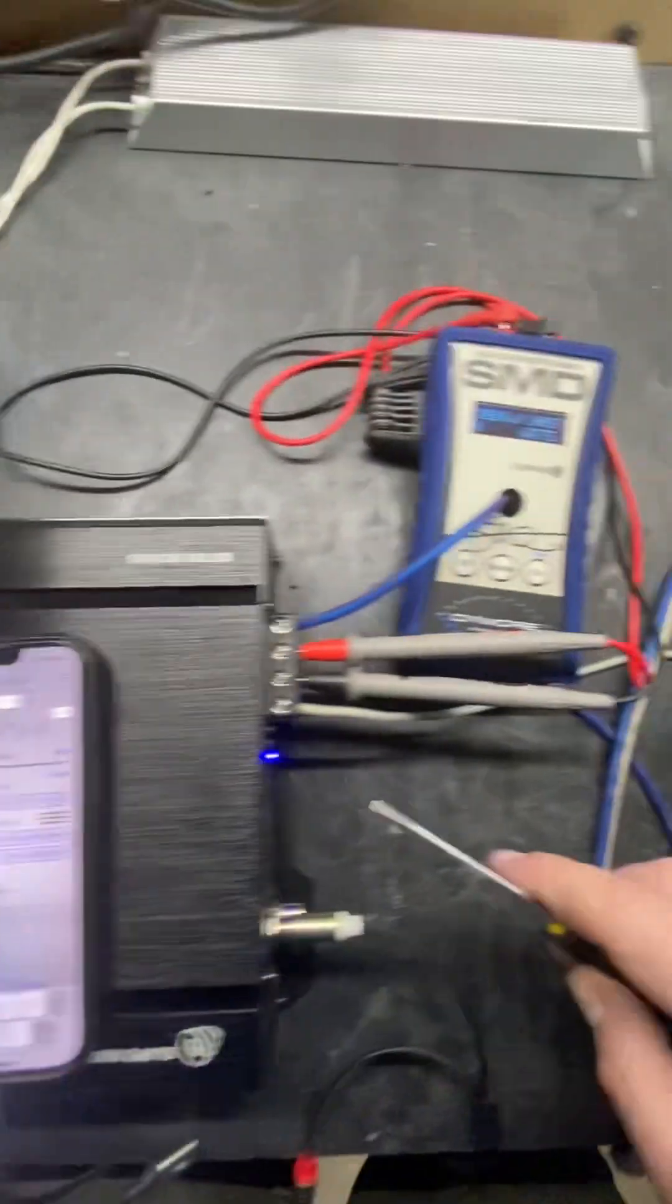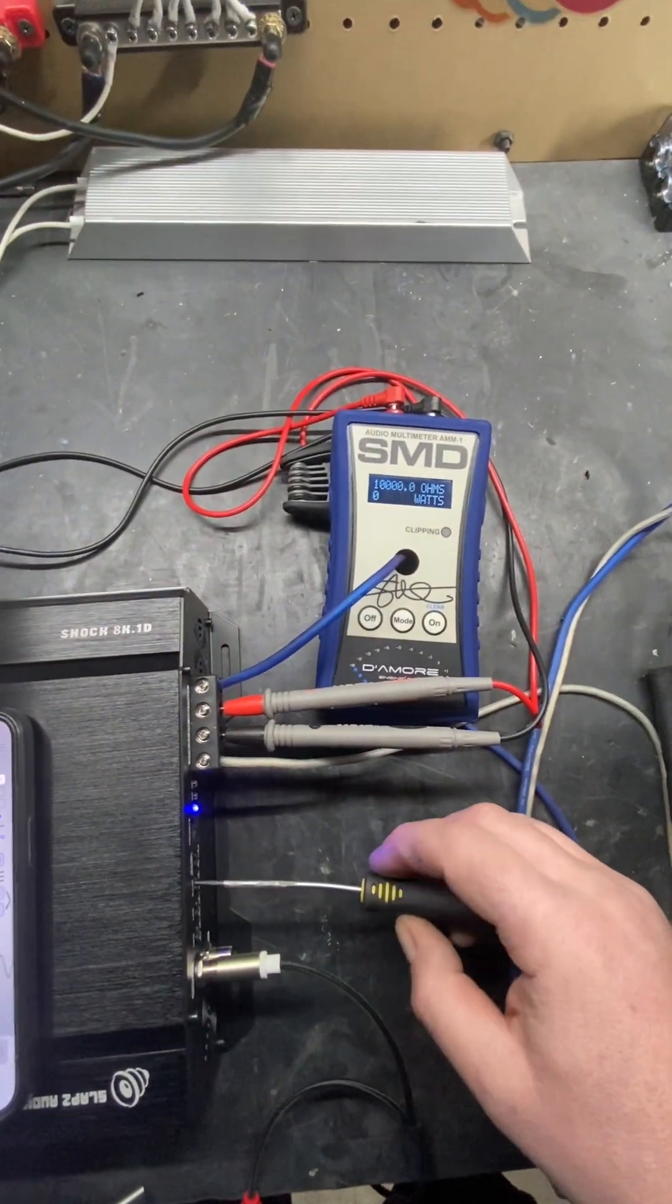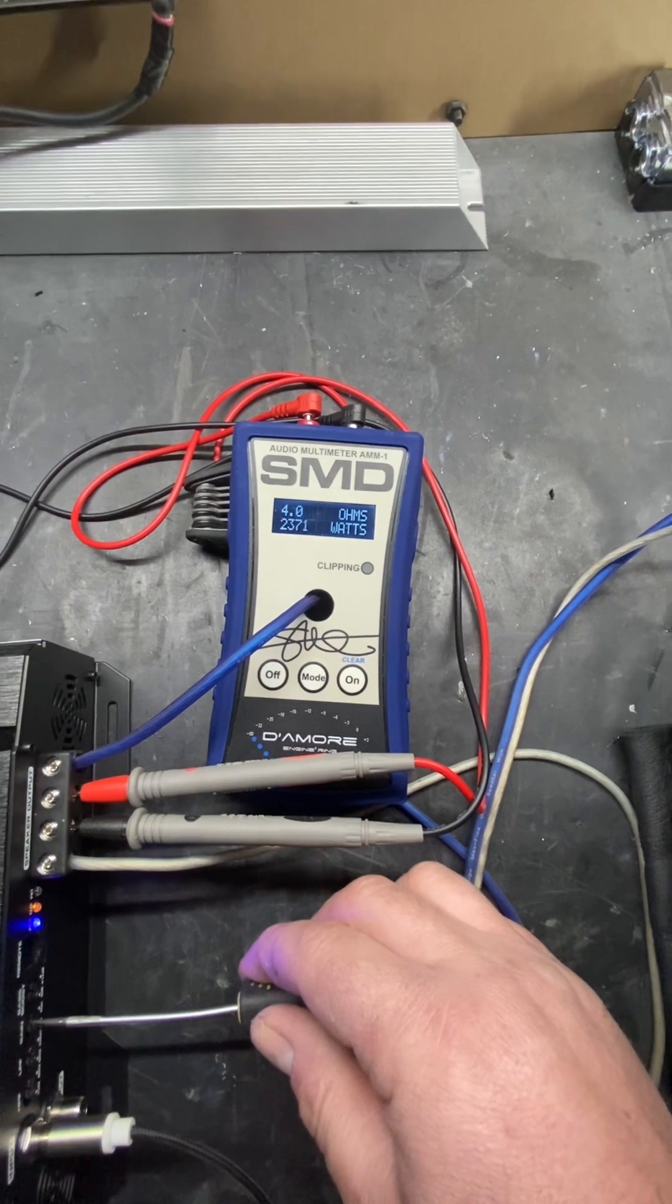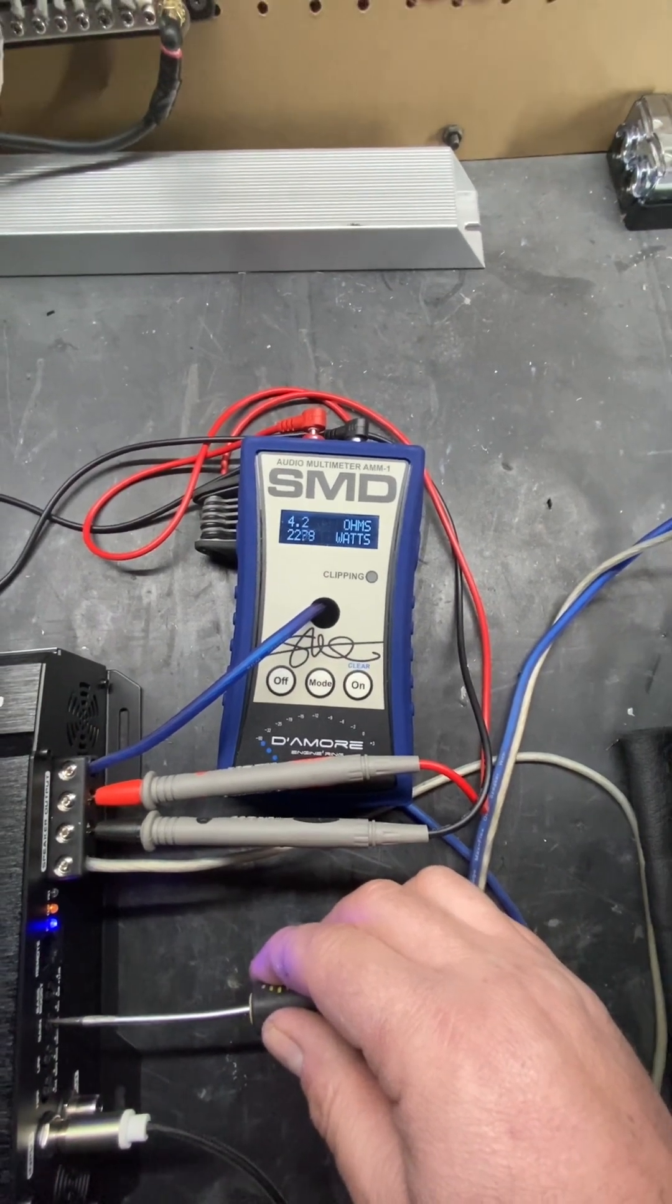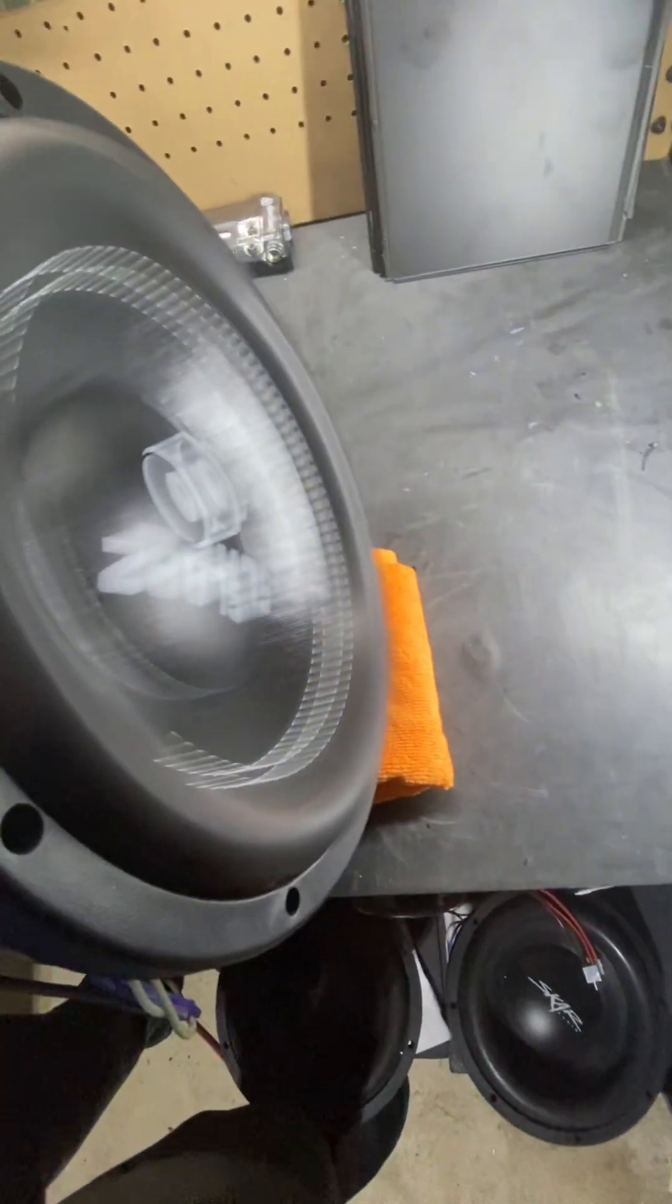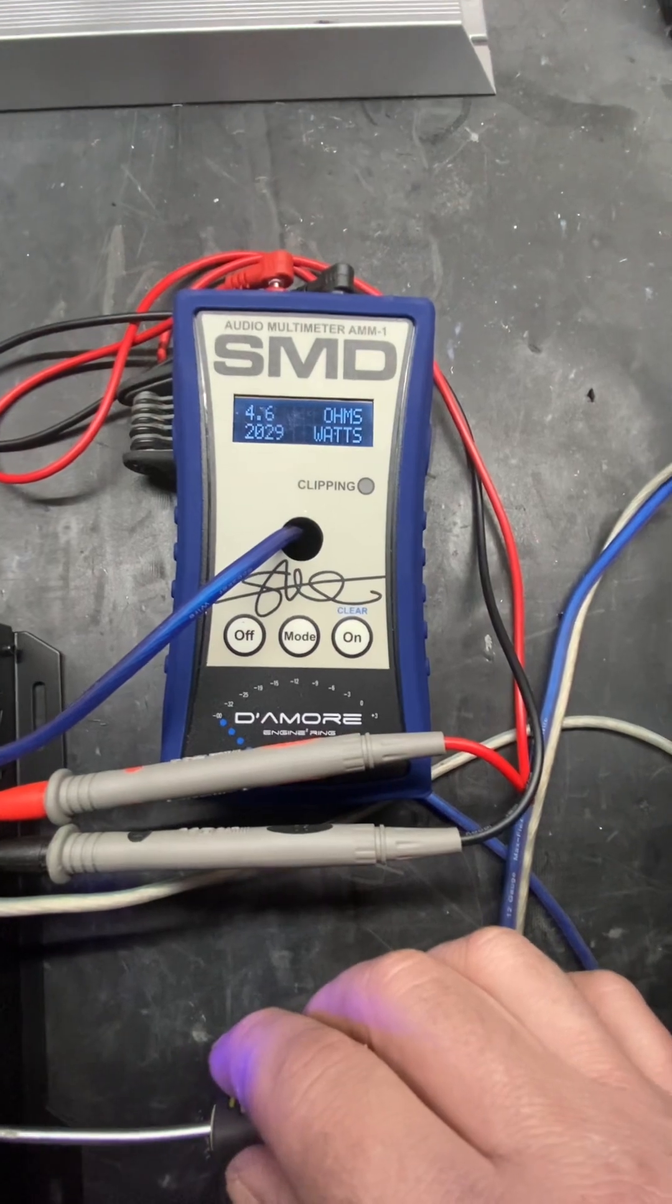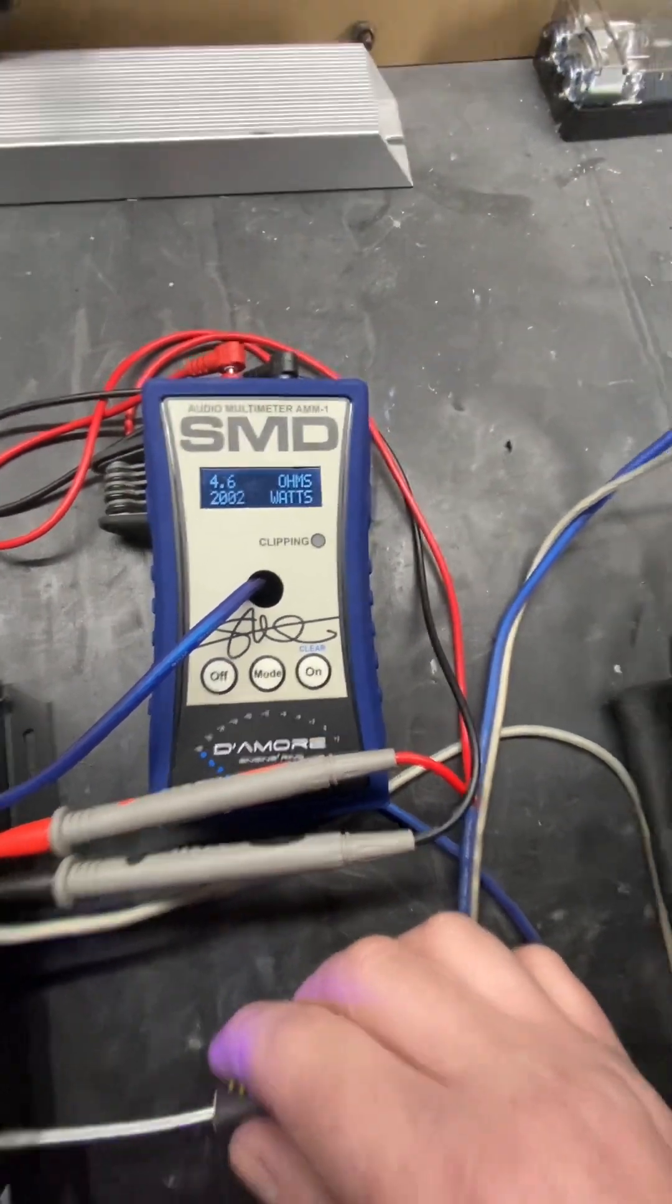And let's play a 60, 60 hertz. 60 hertz now, 60 hertz is going to be a little bit more vicious. Holding about 2300 watts at 4.2 ohms. 1000 watts all day long, rising to 4.6 in free air.